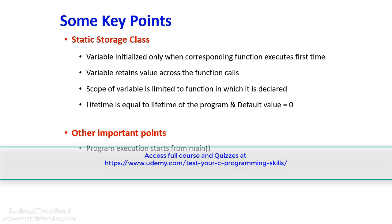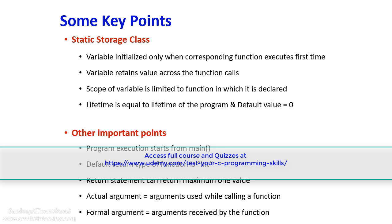A few other important points regarding storage classes and functions: Program execution always starts from the main function, so main is said to be the entry point of the program. The default return type of a function in C is integer, so if you do not mention any return type for a function, it is assumed to be integer by default. Also note that a return statement can return a maximum of one value at a time. Regarding function arguments, there are two terminologies: actual arguments, which are the arguments used while calling a function, and formal arguments, which are the arguments received by the function.